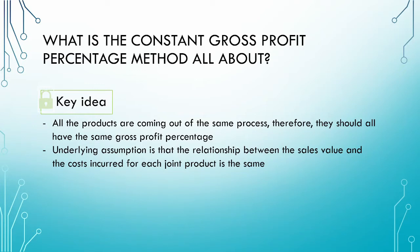What is the constant gross profit percentage method all about? You should recall from our video on the net realizable value method that each product ended up earning a different gross profit percentage. It could be argued that because all the products are inseparable and manufactured in the same process, all the products should earn an identical gross profit percentage. This is the key idea behind the constant gross profit percentage method — it assumes that the relationship between the sales value and the costs incurred for each joint product is the same, resulting in each product having an identical gross profit percentage.